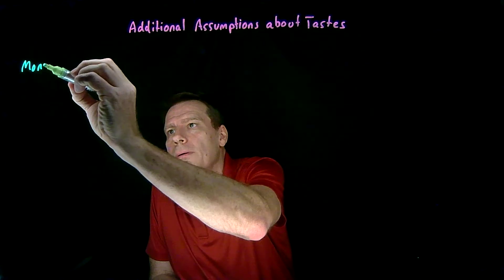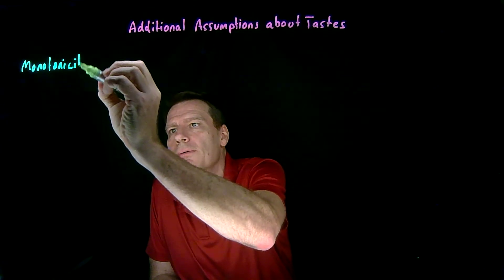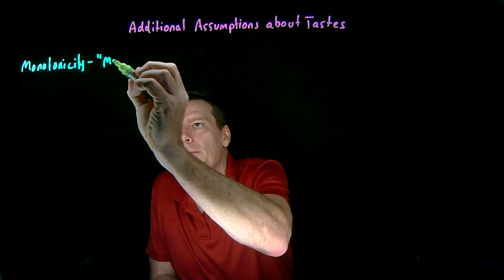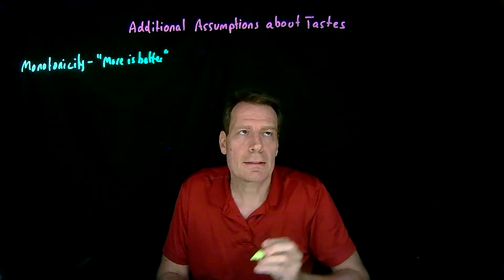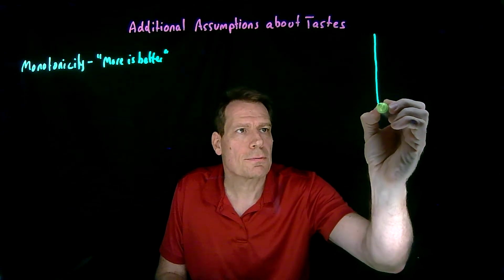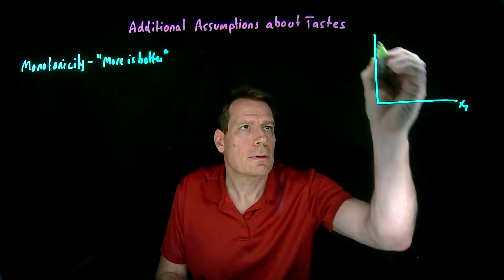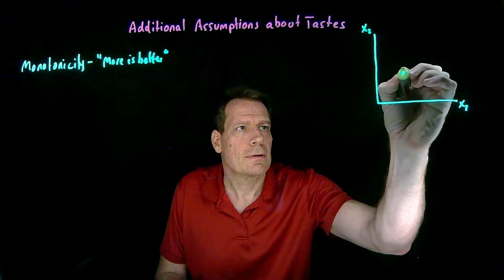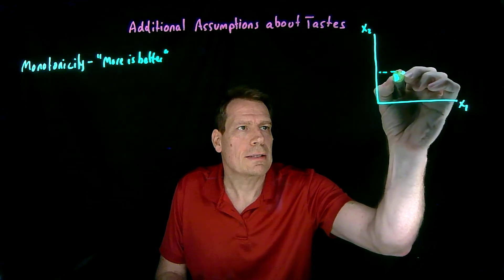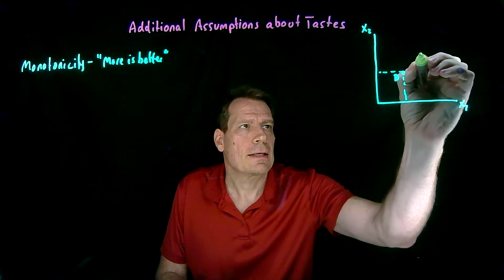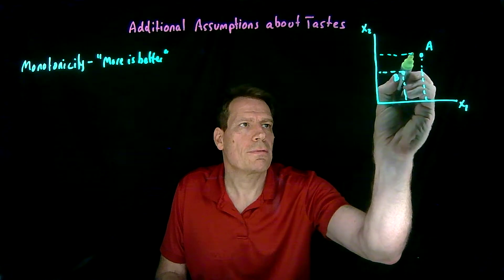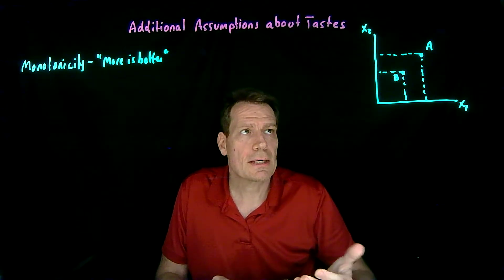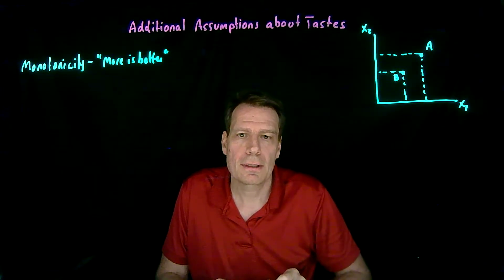The first of those is called monotonicity, which is just a fancy word for saying more is better. What we mean by that is that if you're looking at different bundles of goods, and you have a bundle B that has this much of x2 and this much of x1, and bundle A that has more of everything — more of x1, more of x2 — then it's going to be the case that you'll prefer A to B.